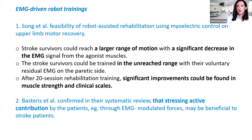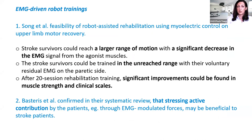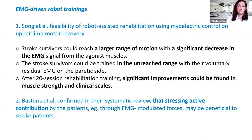There are a few concepts behind Luna EMG, one of which is EMG-driven robotic training. Studies on robot-assisted rehabilitation used on stroke patient groups show that stroke survivors can reach larger range of motion and a significant decrease in the EMG signal from agonist muscles — working specifically on the muscles we want them to activate in a certain movement. They can be trained with active-assistive training in previously unreached ranges of motion.